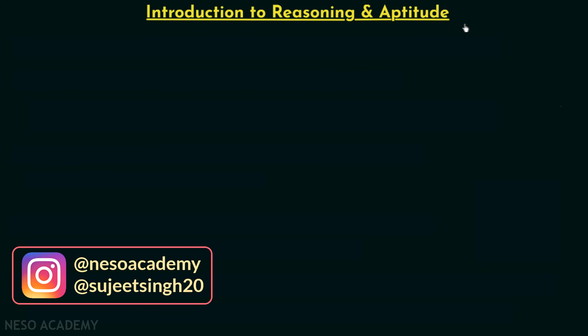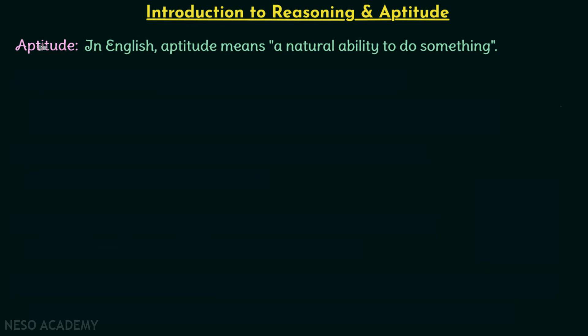Question number one is: what is reasoning and what is aptitude? Aptitude in English means the natural ability to do something. So your natural ability or capability to do something is known as aptitude.